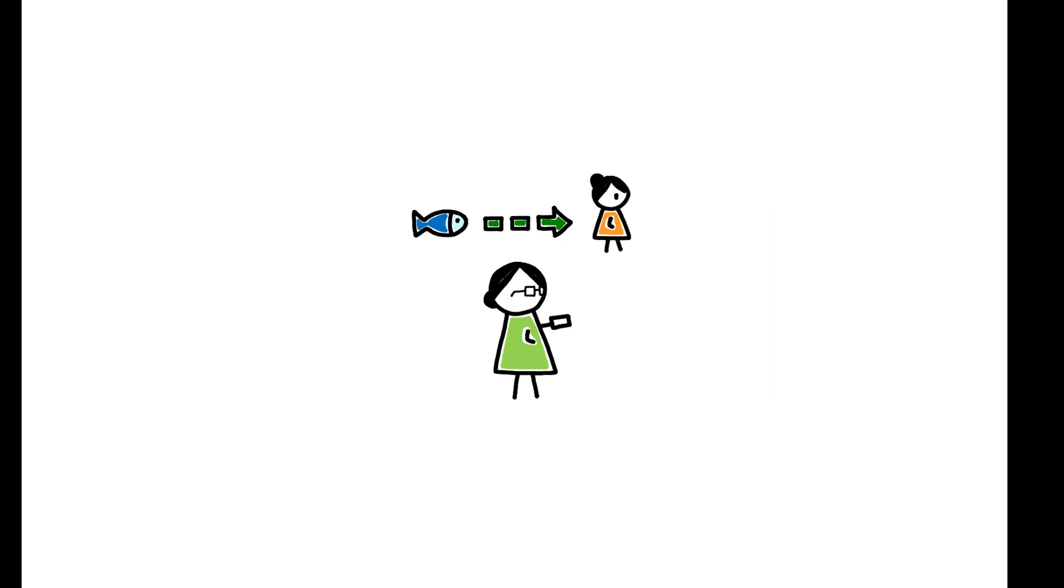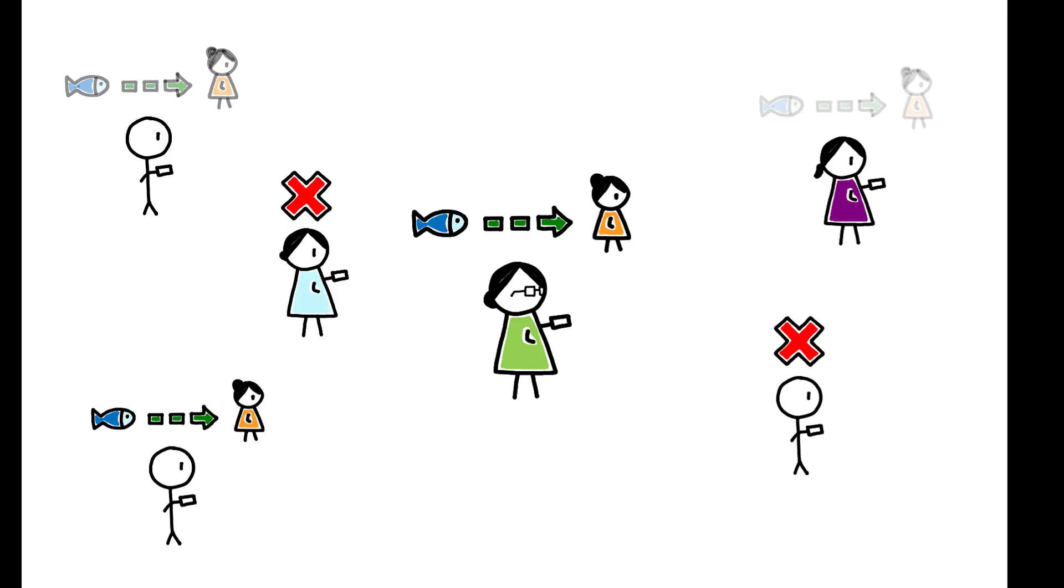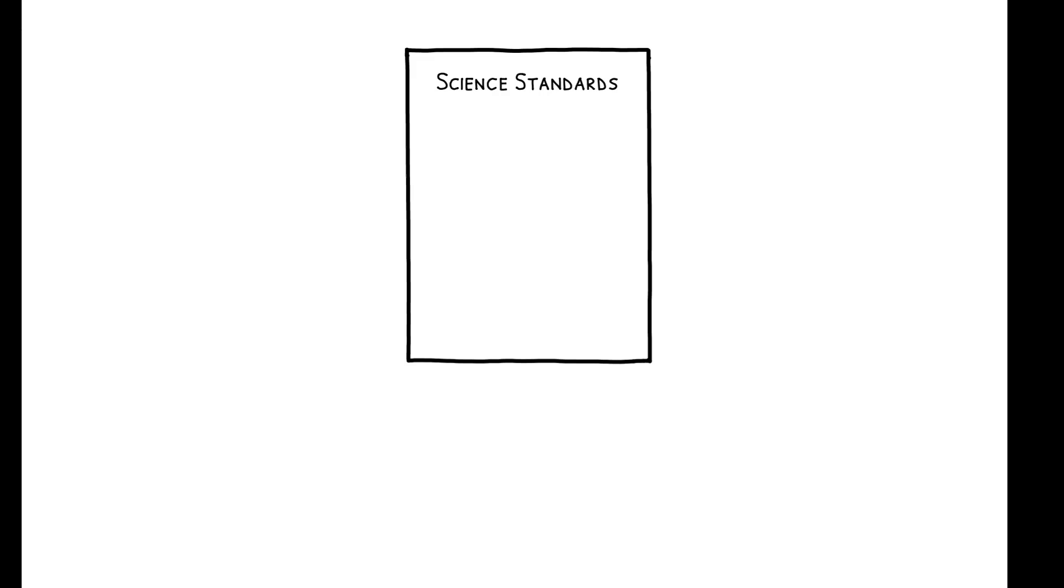Well into the 21st century, there continues to be substantial variation across states and years in the coverage of evolution in school, and this paper focuses on the portion of that standard variation attributable to state science education standards.